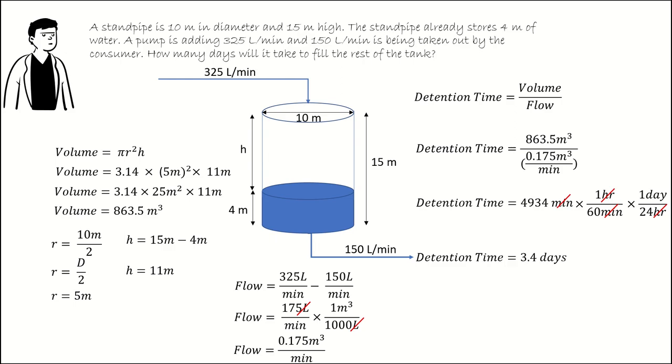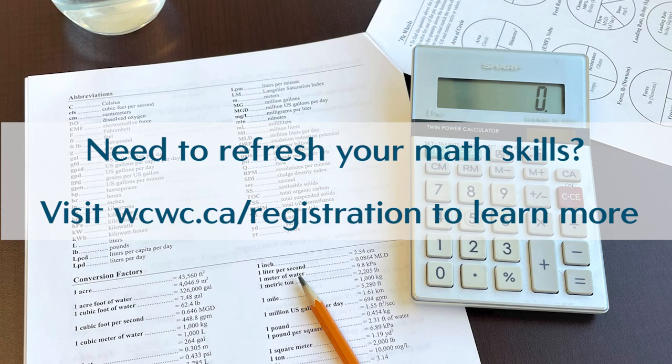So a standpipe that's 10 meters in diameter and 15 meters high, already containing 4 meters of water, filling at 325 liters per minute, while customers take 150 liters per minute will take 3.4 days to fill the rest of the way.